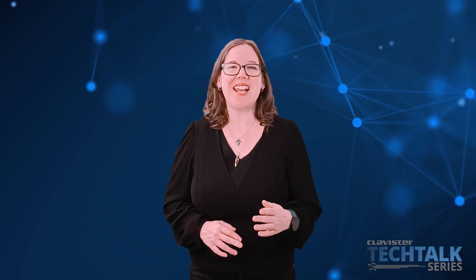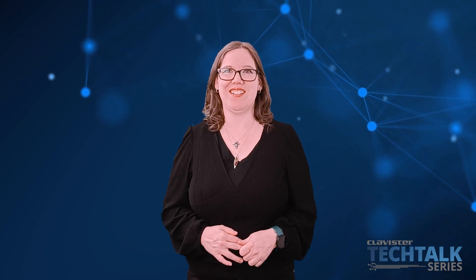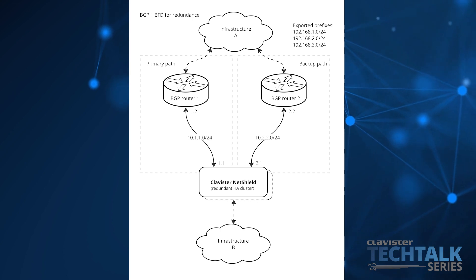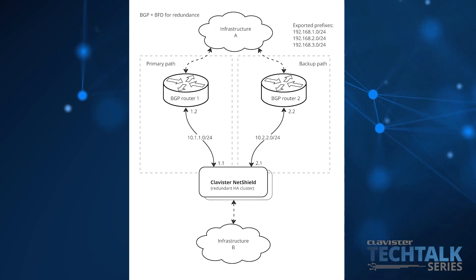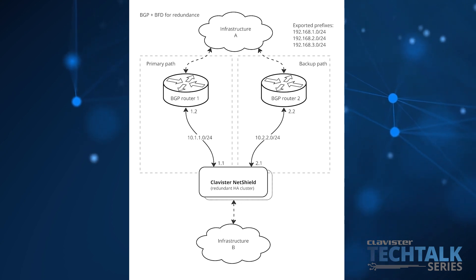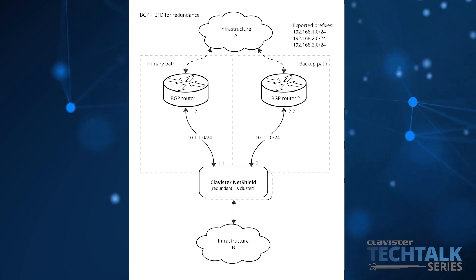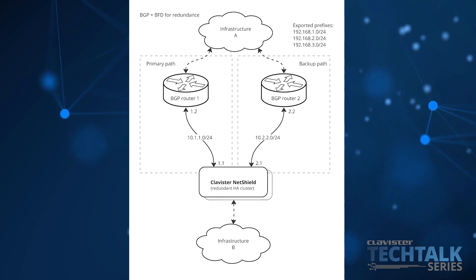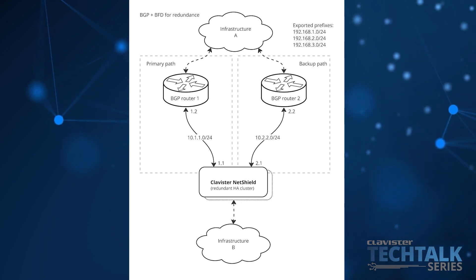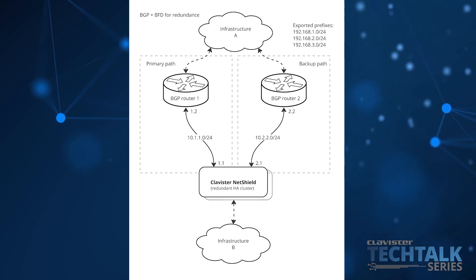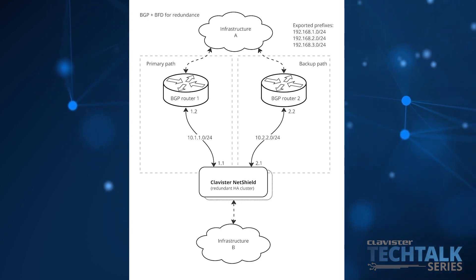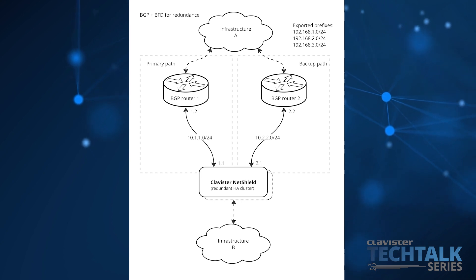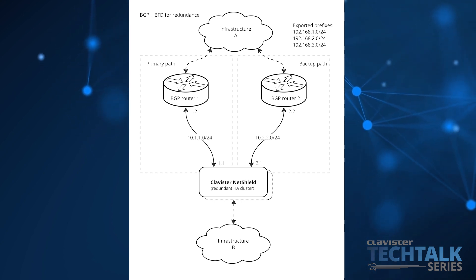Without configuring 120 BGP neighbors, let's check out what it looks like in NetShield. Here we can see the Clevis and NetShield firewall connected to two different BGP neighbors. Both routers are exporting the same prefixes for the networks reachable in Infrastructure A. As the prefixes are redundant, the NetShield BGP engine will select one of them as the primary path, where all traffic will be routed as long as the path is operational.